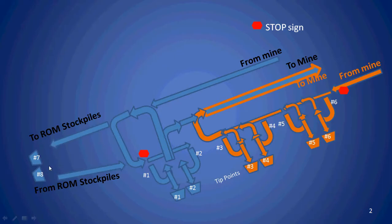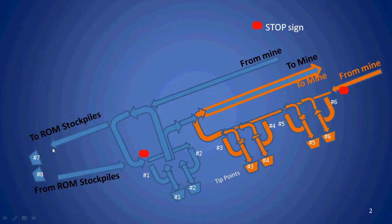The simulation handles multiple tip points and also the type of material that can be tipped. In addition, it handles decision points — these are the points where a truck must decide, for example, whether an ore truck tips here or goes around to tip at one of the run of mine stockpiles. In this video we'll discuss how tip points and decision points are specified in the simulation, along with some of the associated logic around decision points.